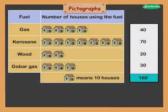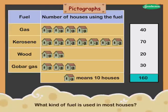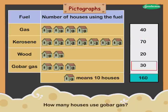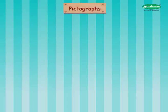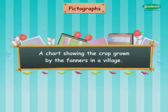Let us look at the next example. This is a chart showing what kind of fuel is used in the kitchen in 160 houses in a village. Kerosene is used as fuel in most houses. 3 × 10 = 30 houses use gobar gas. 4 × 10 = 40 houses use gas.